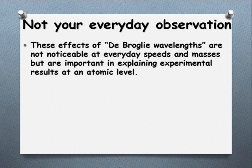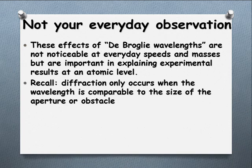What it does do is help explain some of the results we see at an atomic level — really small particles moving at high speeds. Diffraction is only going to occur when the wavelength is similar in size to the aperture or the particle that's going around. So if we see diffraction from particles, then we would assume that yes, it's displaying wave-like properties because diffraction is a wave property. That's what we spent the first part of this topic talking about.